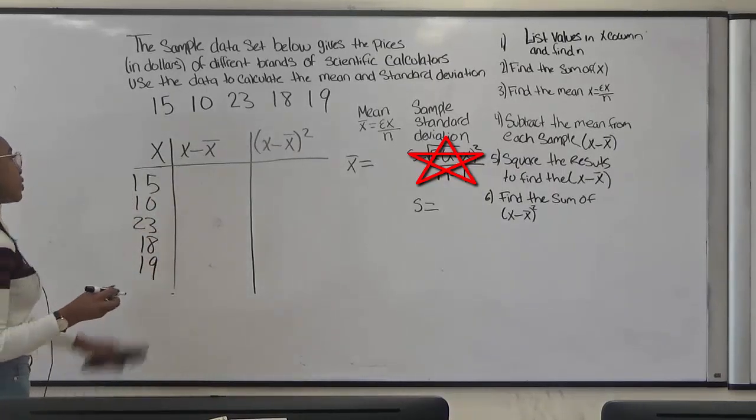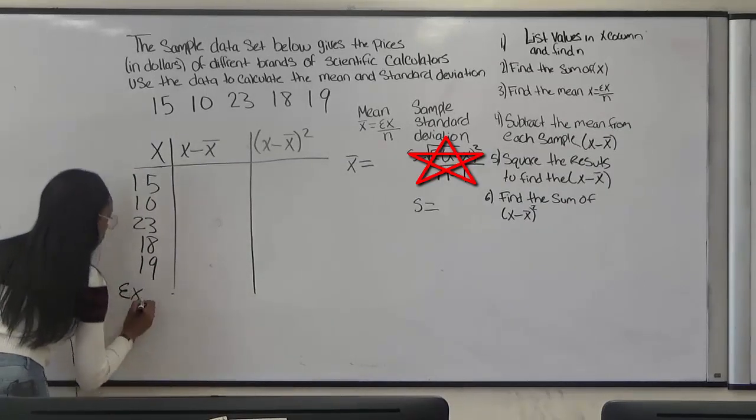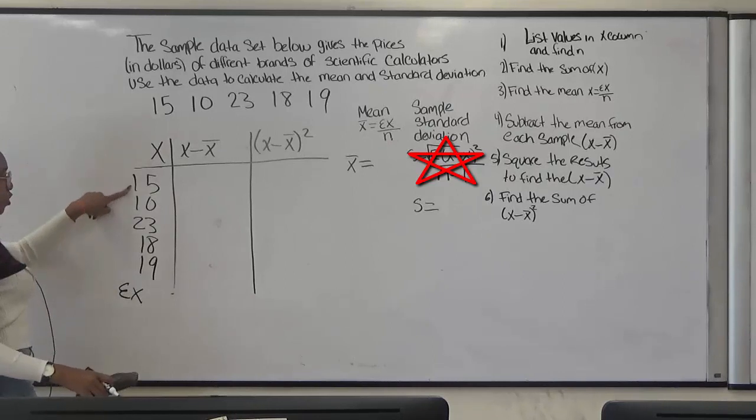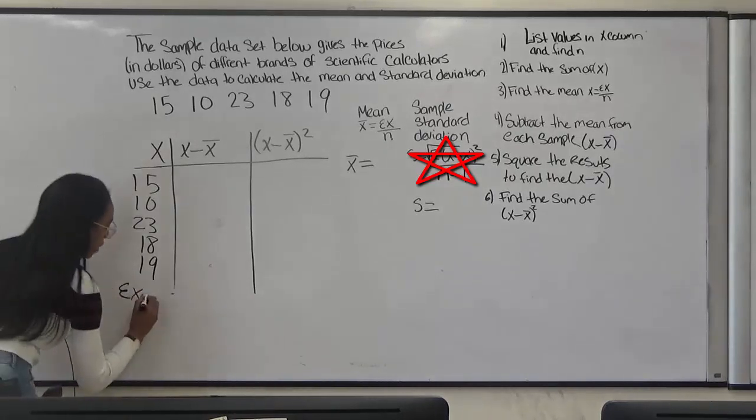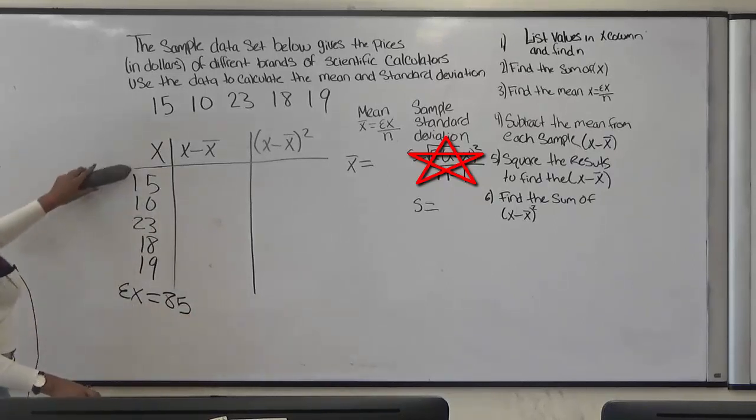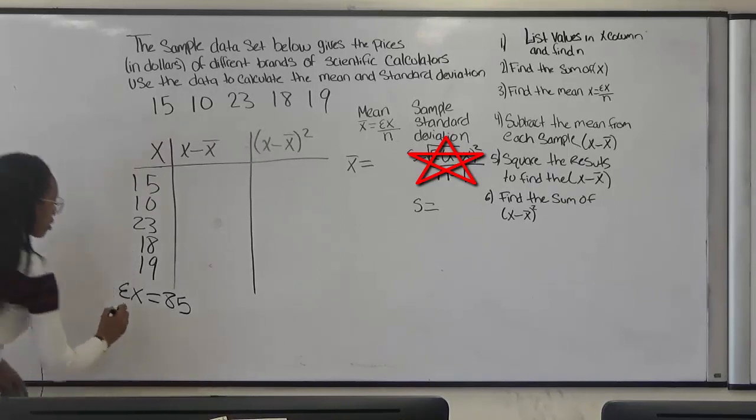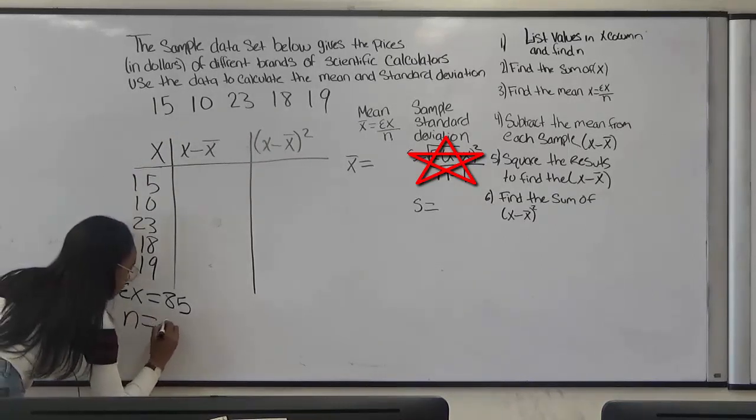Now that we listed our values we can find the sum of x. So to find the sum of x we have to add all of these numbers together. When you add them you get 85. To find n you just count the amount of numbers in the row: 1, 2, 3, 4, 5. So our n equals 5.